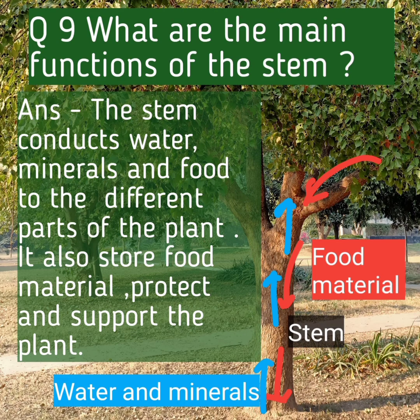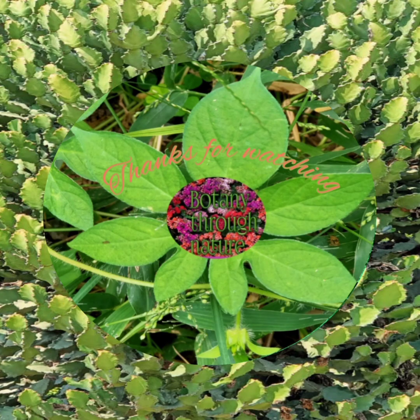Question number nine: What are the main functions of the stem? Answer: The stem conducts water, minerals, and food material to the different parts of the plant. It is also modified to store food material, protect, and support the plant.